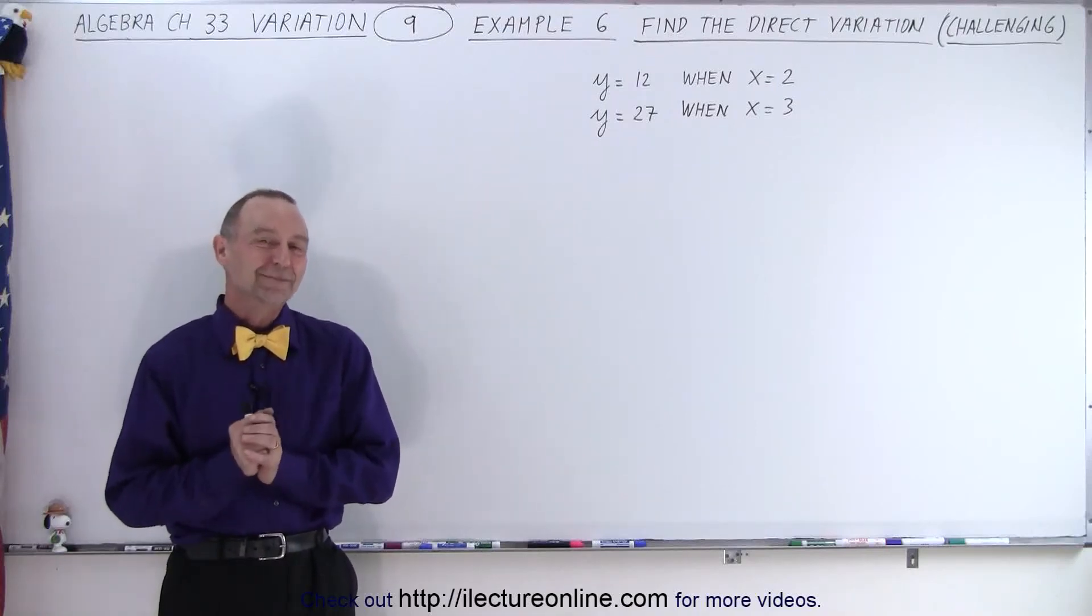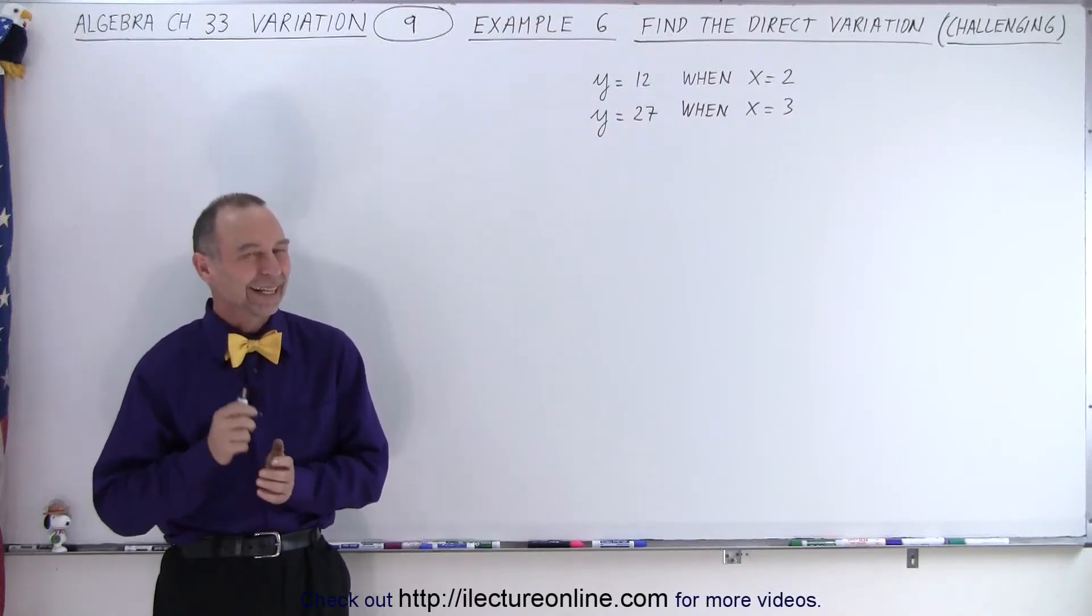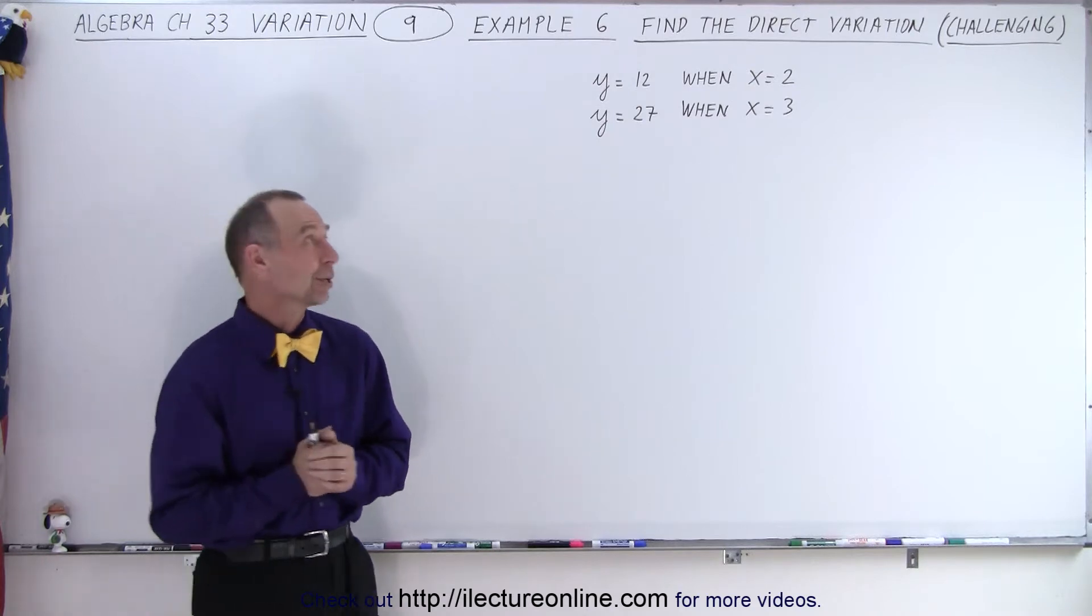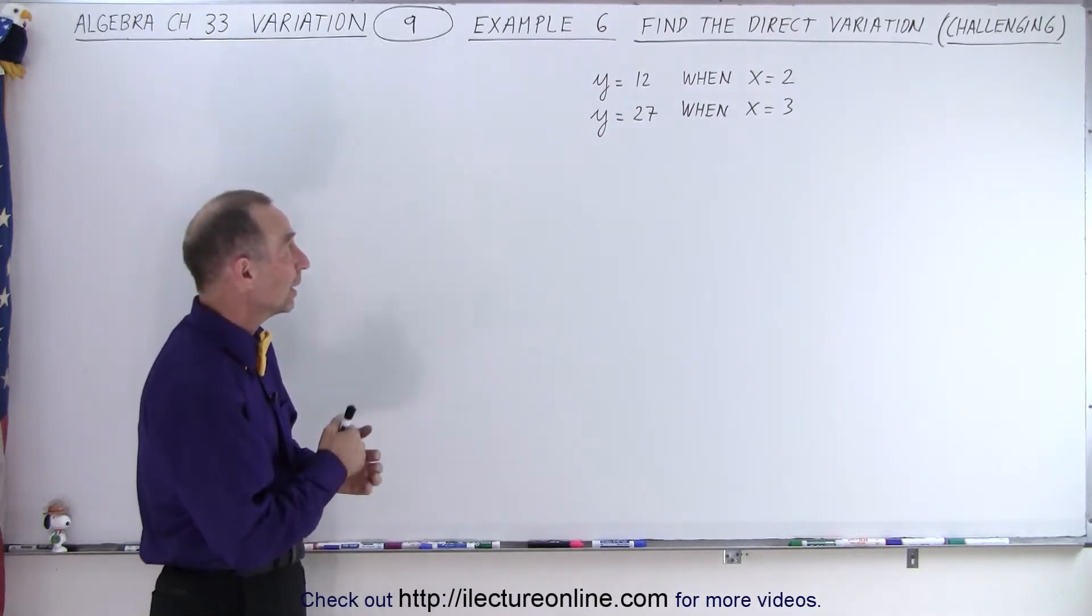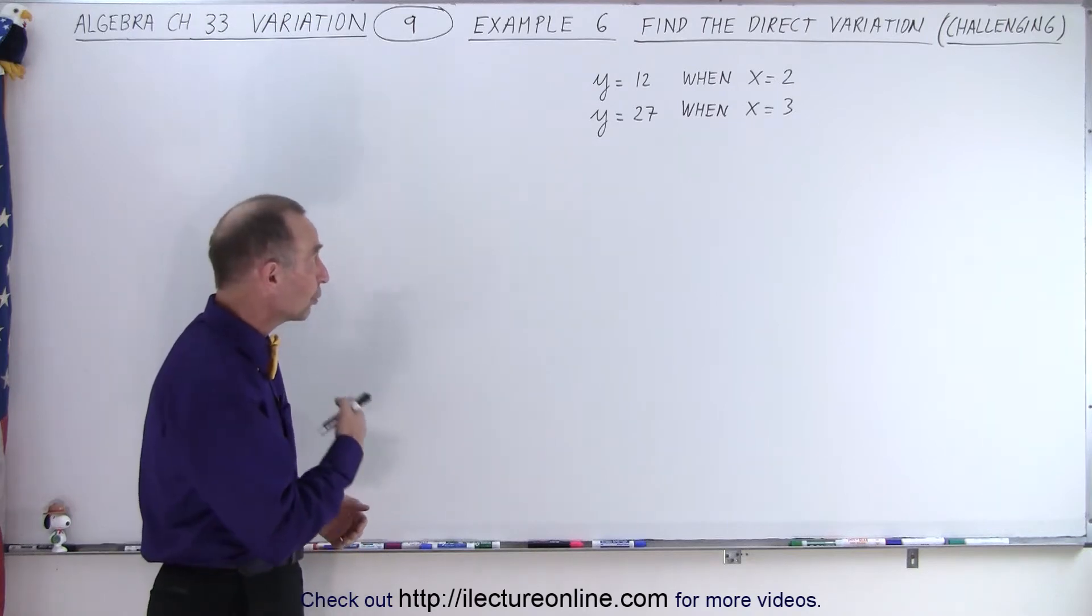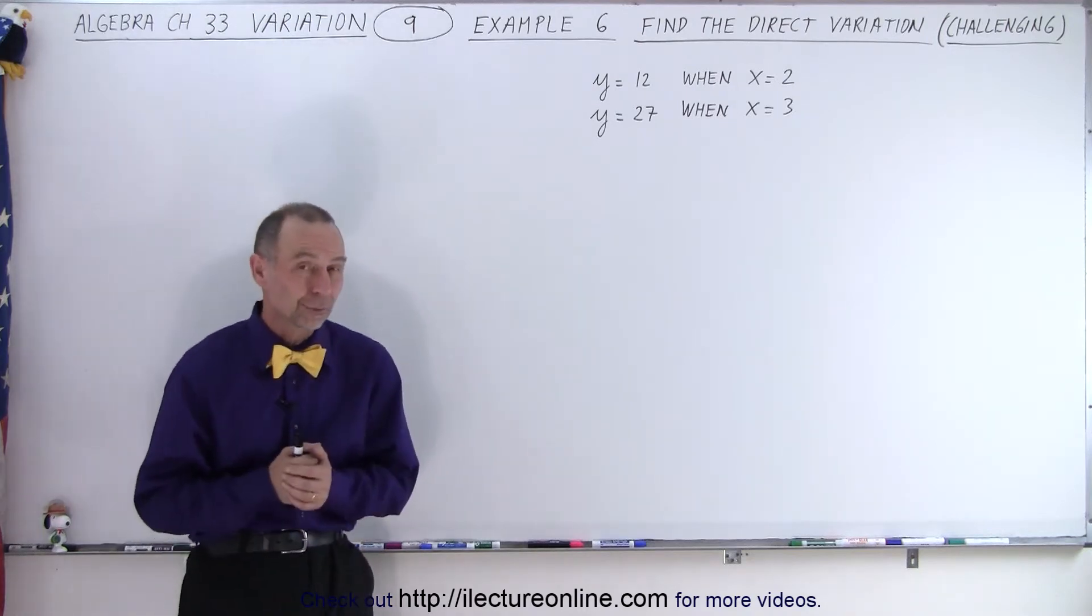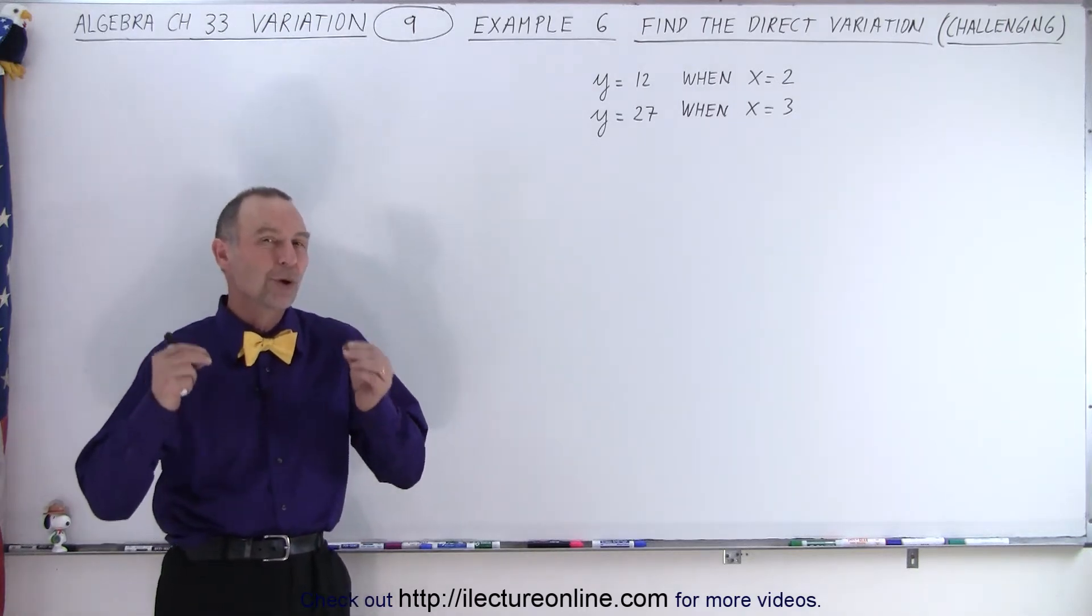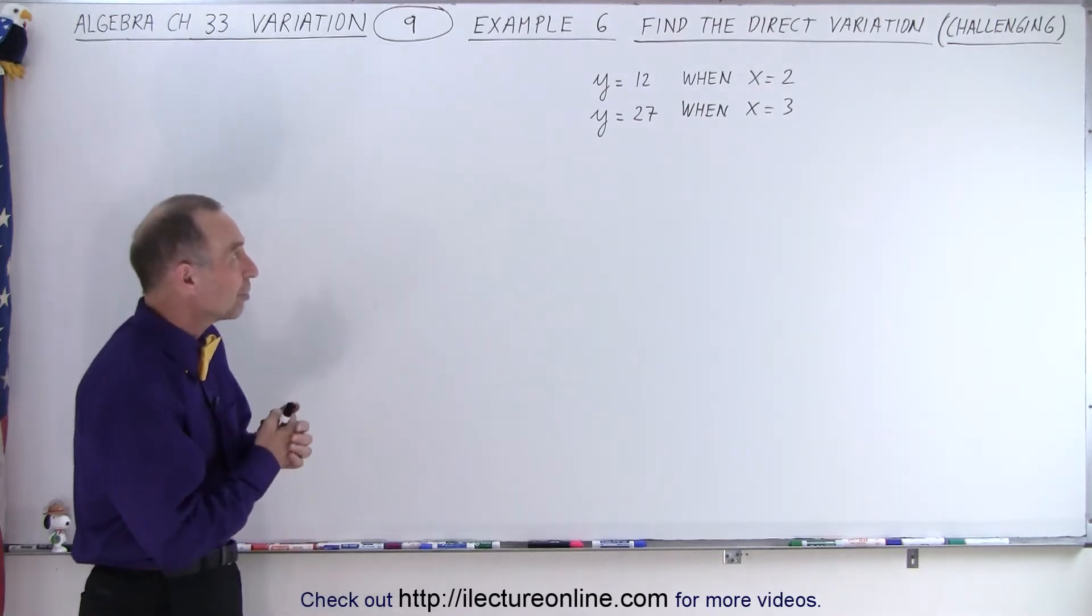Welcome to our lecture online. Now for something a little bit more challenging. Here we're given that y is equal to 12 when x is equal to 2, and y is equal to 27 when x is equal to 3, and we're supposed to come up with the equation of variation.